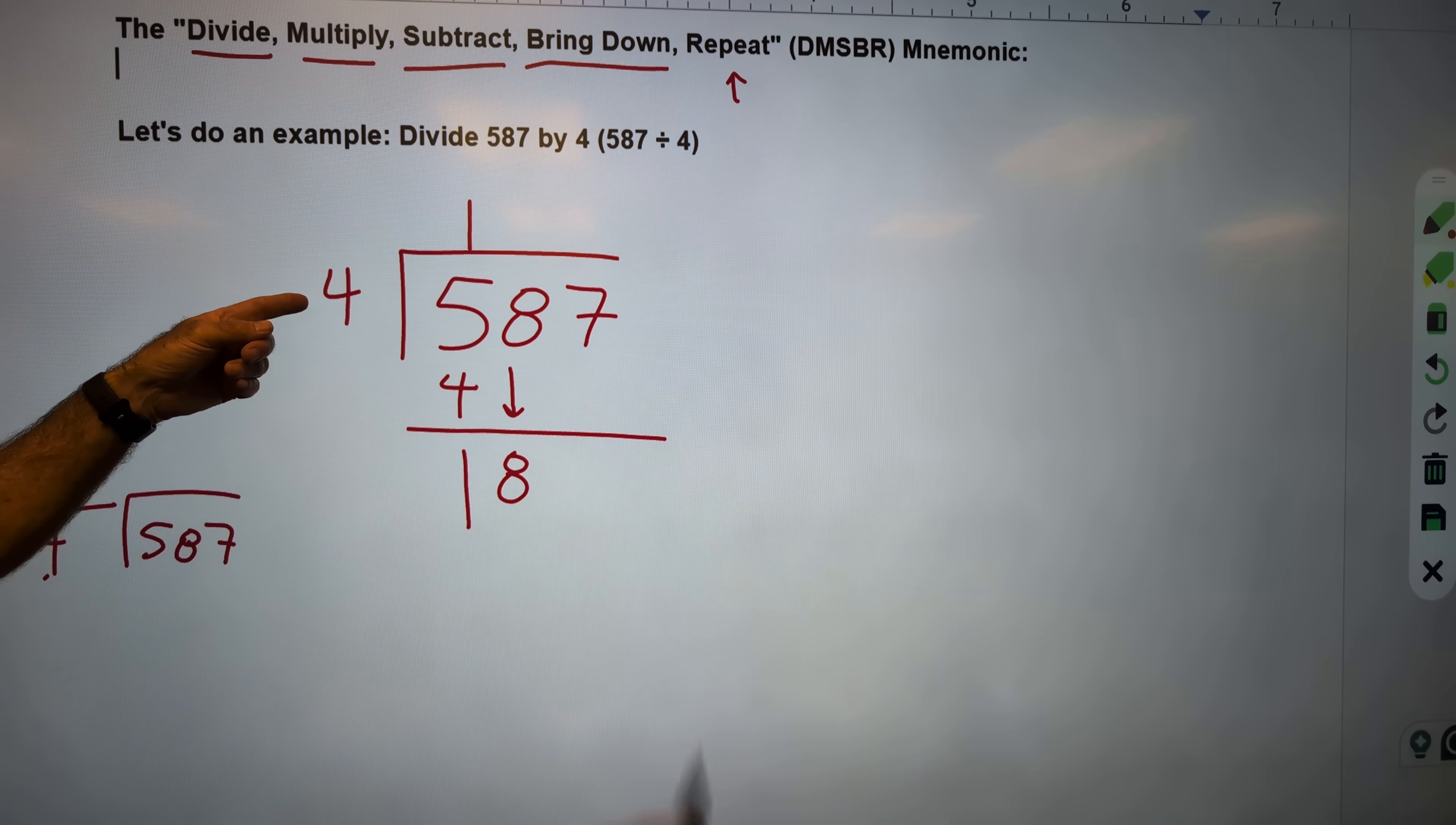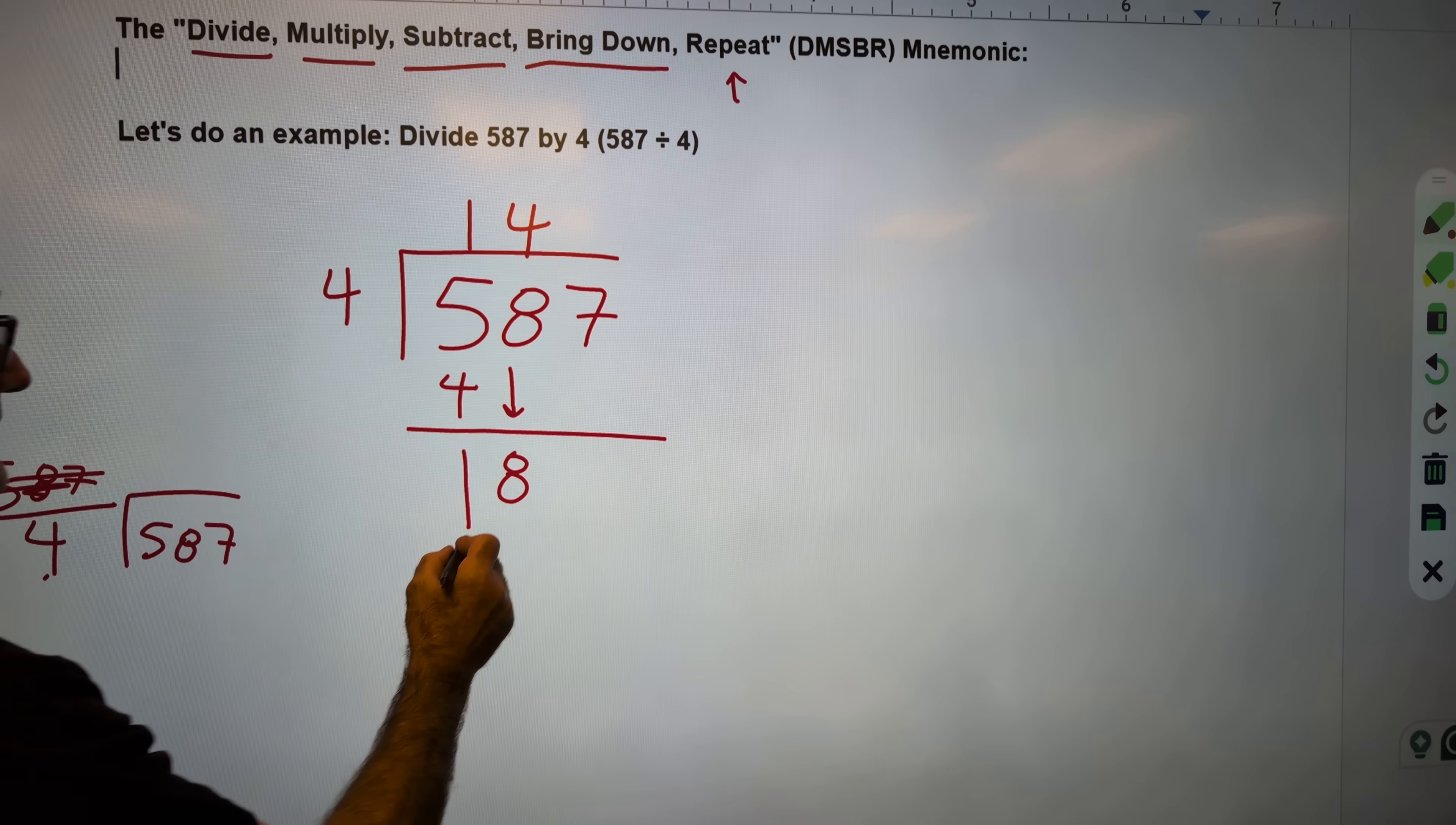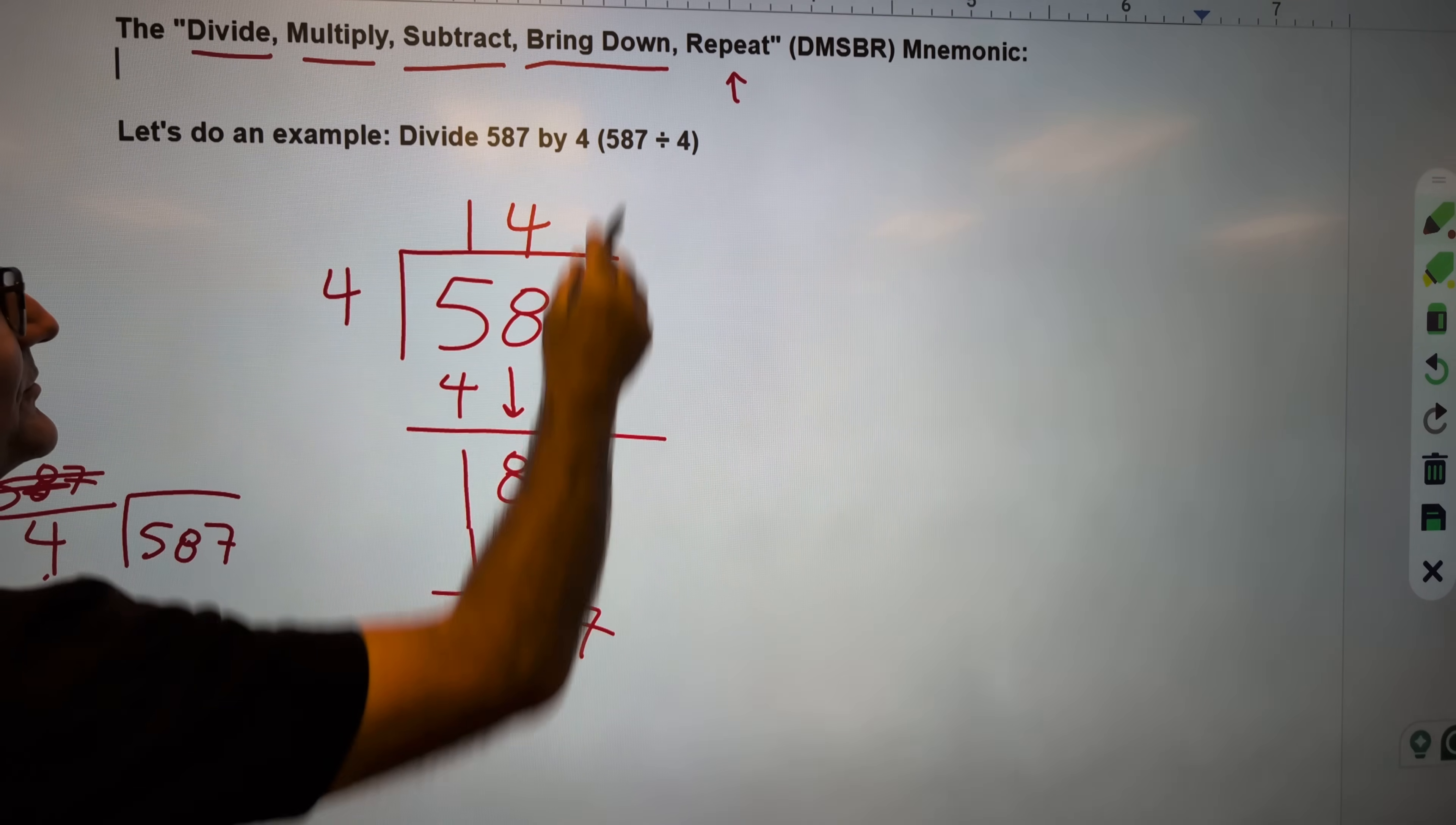How many times does 4 go into 18? It goes in there 4 times. Again, that was my divide. 18 divided by 4 is 4. Multiply. 4 times 4 is 16. Subtract. 18 minus 16 is 2. Bring down. Bring down that 7. Twenty-seven. Repeat.